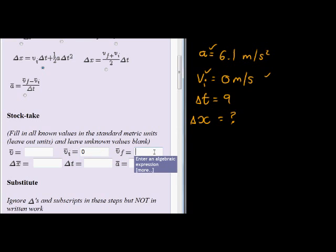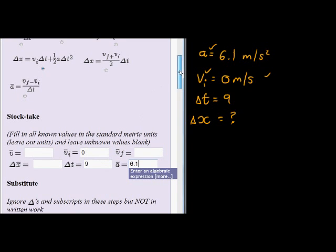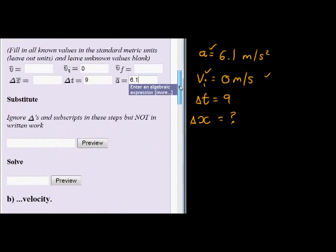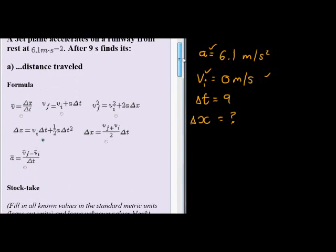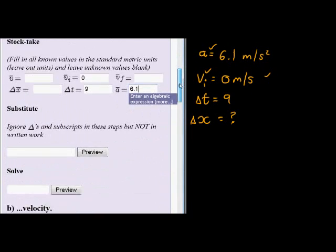Future velocity, we do not know. Delta X is what we're trying to calculate, so we're not going to put that one in. Delta T, we know, is 9 seconds. And acceleration, we were given that as 6.1 meters per second squared. Now what did they mean by standard metric units? That means we're working in meters, in seconds, and not in kilometers and hours. Although all of our information has been given as meters per second.